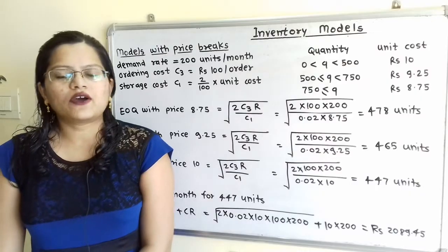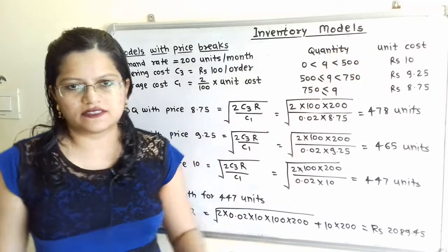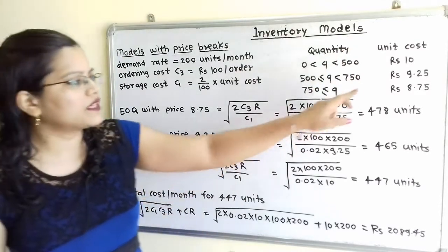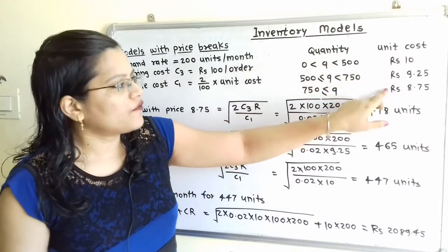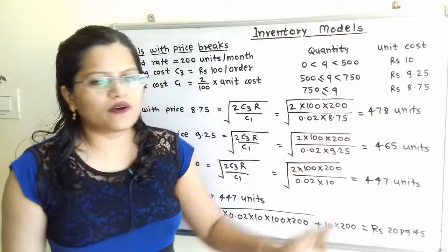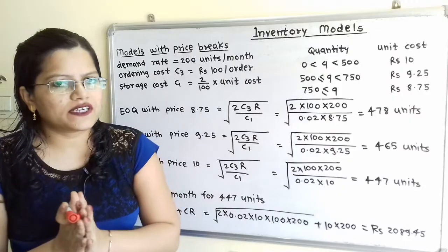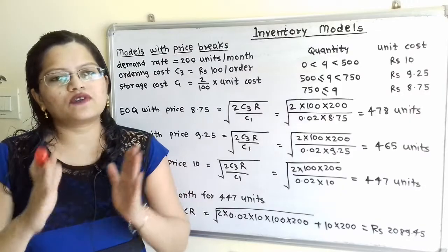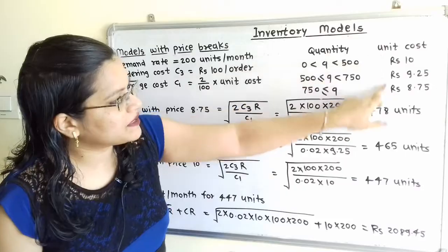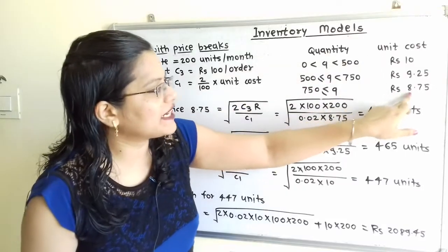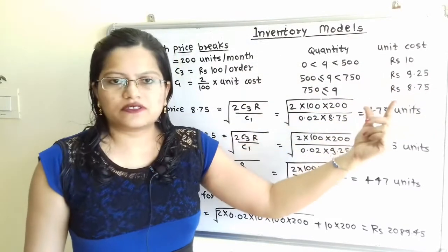For this question, we first find the Economic Order Quantity for different prices and check feasibility. We start from the lowest price. The lowest price among these three is Rs.8.75, so we will take this first. The first step is to find the EOQ and check its feasibility.